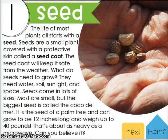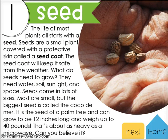The first stage is something called a seed. The life of most plants all starts with a seed. Seeds are a small plant covered with a protective skin called a seed coat. The seed coat will keep it safe from the weather. What do seeds need to grow? They need water, soil, sunlight, and space.